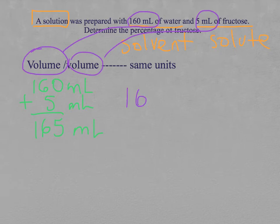It means that one hundred and sixty-five milliliters correspond to one hundred percent. Why? Because this addition makes the complete solution. And the question is, how many fructose are there? What is the percentage? I don't know the percentage of fructose, but I do know that there are five milliliters.